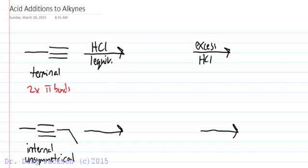It turns out that due to the mechanism, we're going to get anti-addition of the H and the Cl of the acid. If we look at the product of the first addition of HCl, one equivalent, we see that we also have a Markovnikov type addition. We add to the more substituted carbon of a terminal alkyne.